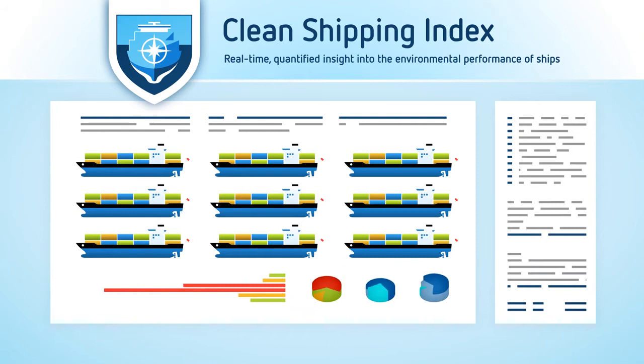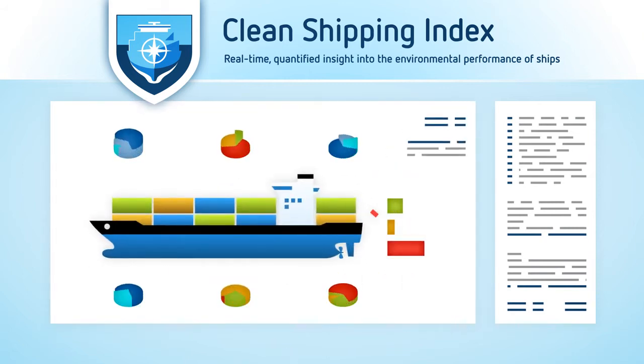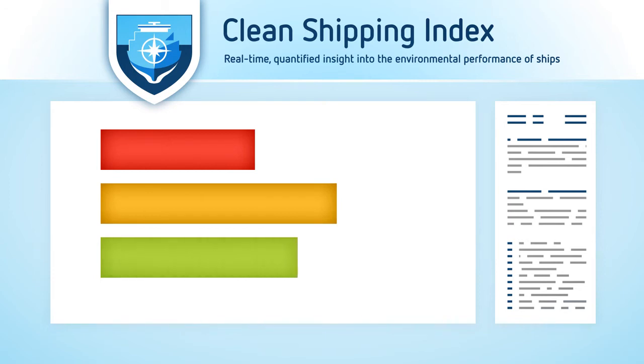Information can be viewed not only for an entire fleet or a single ship, but also just a specific issue of choice, like CO2, for instance. Readouts are easy. Total scores are shown in red for low performance, yellow for medium performance, and green for high performance, which is pretty hard to get.